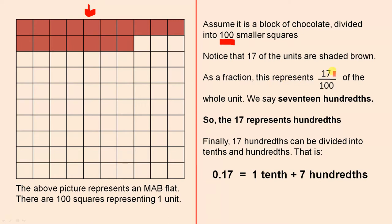As a fraction, this represents seventeen over a hundred of the whole unit. That makes sense, because seventeen have been shaded brown and there are one hundred altogether. We say seventeen hundredths. So the seventeen represents hundredths.